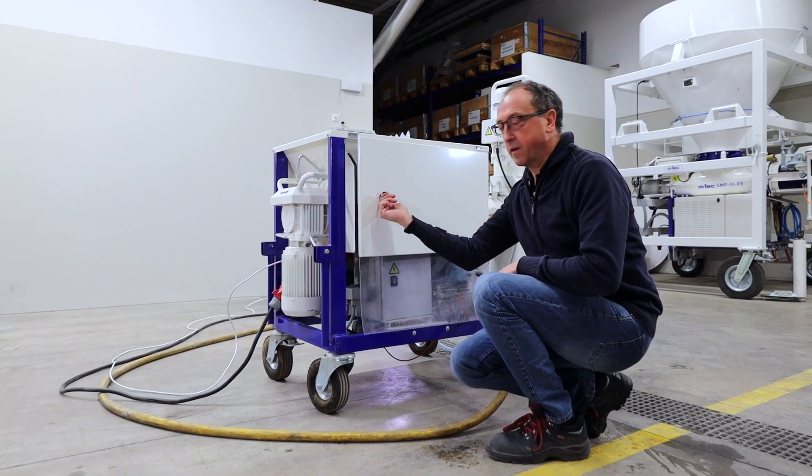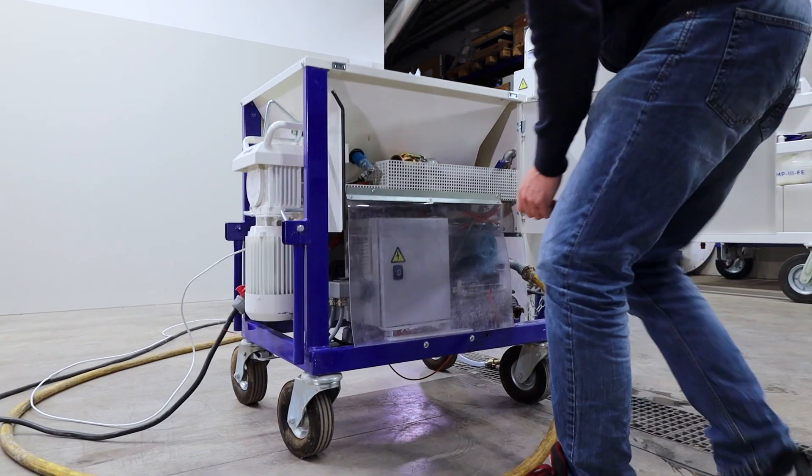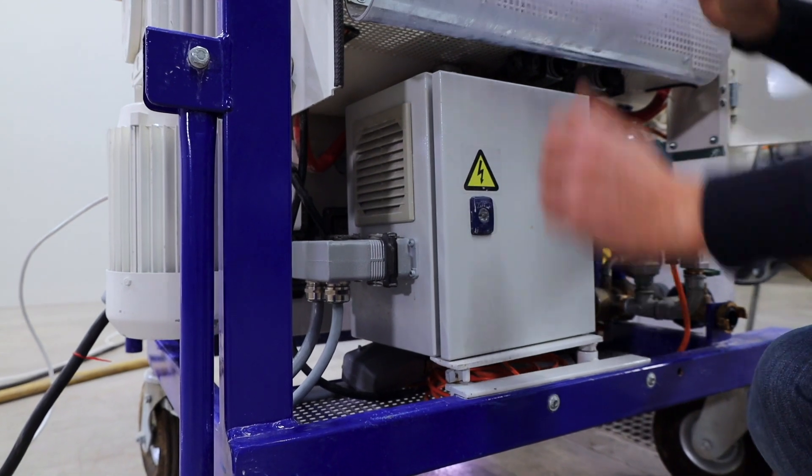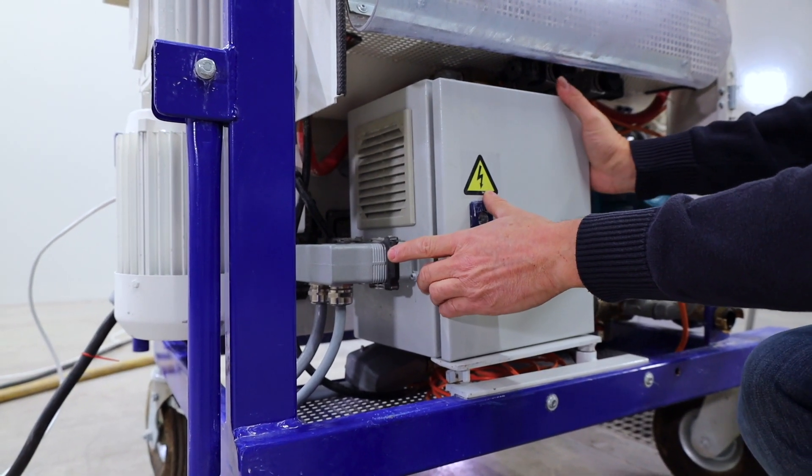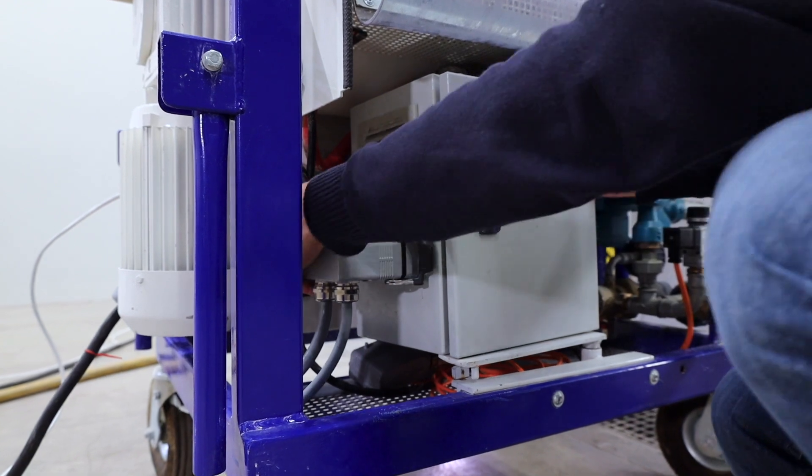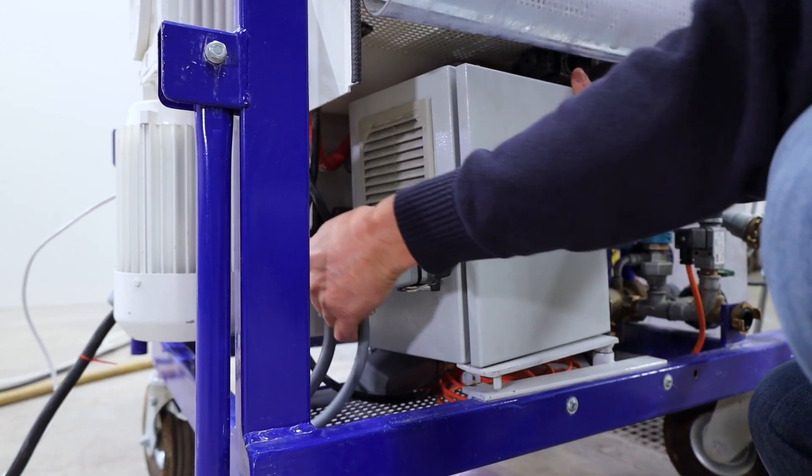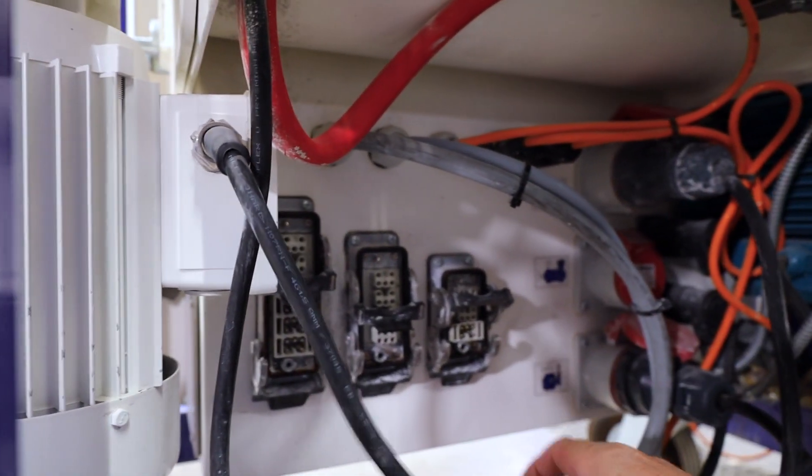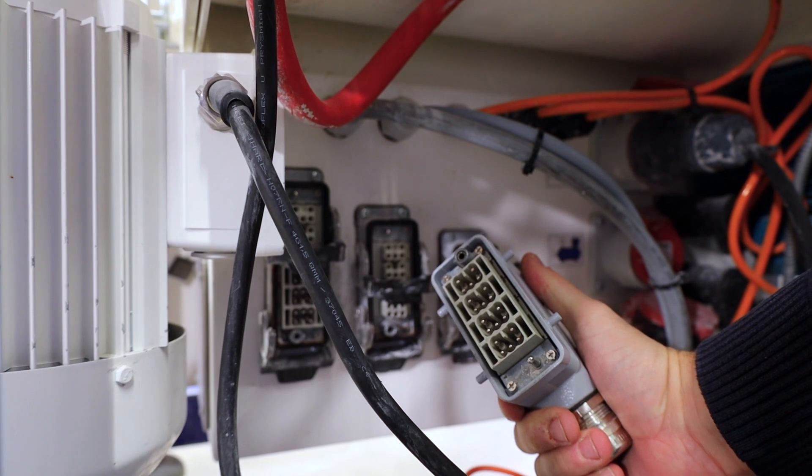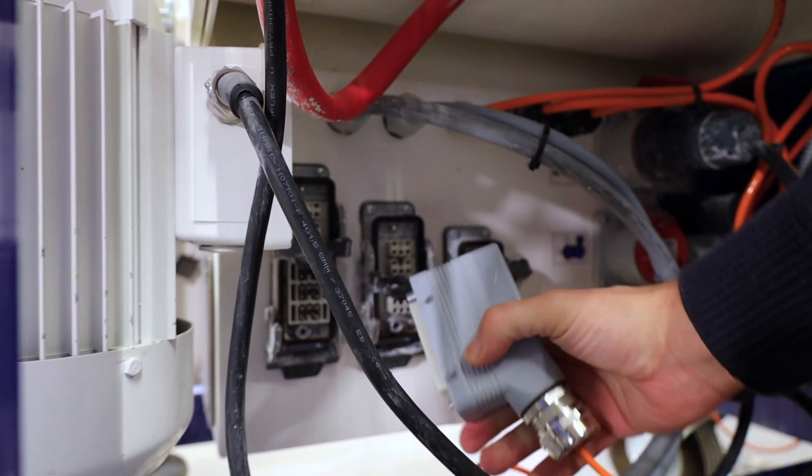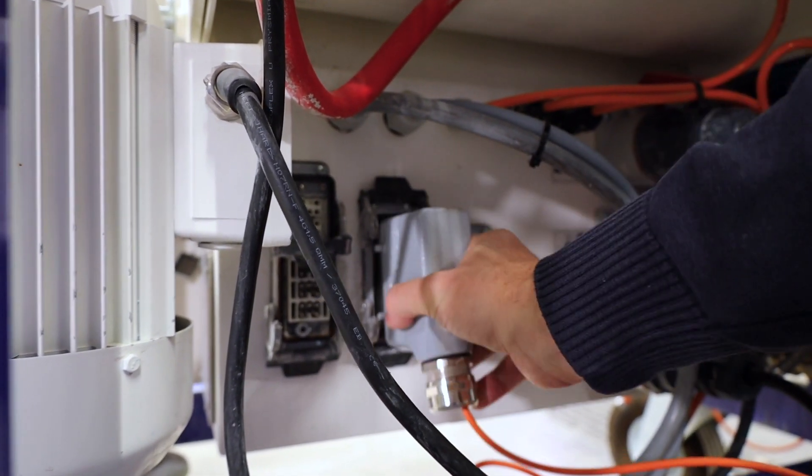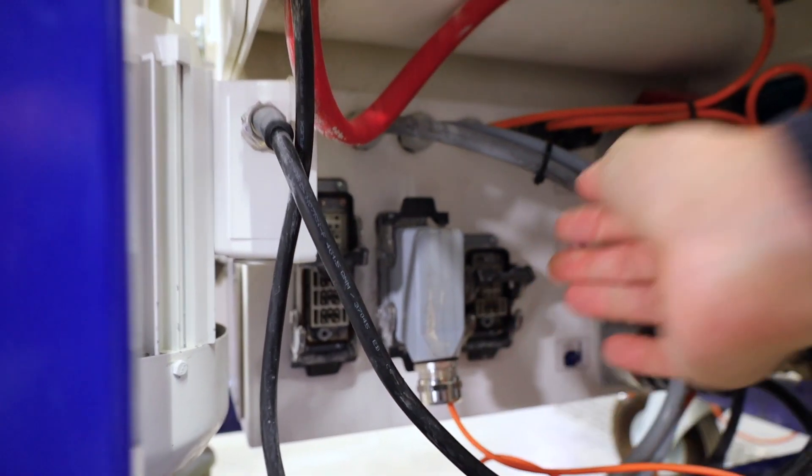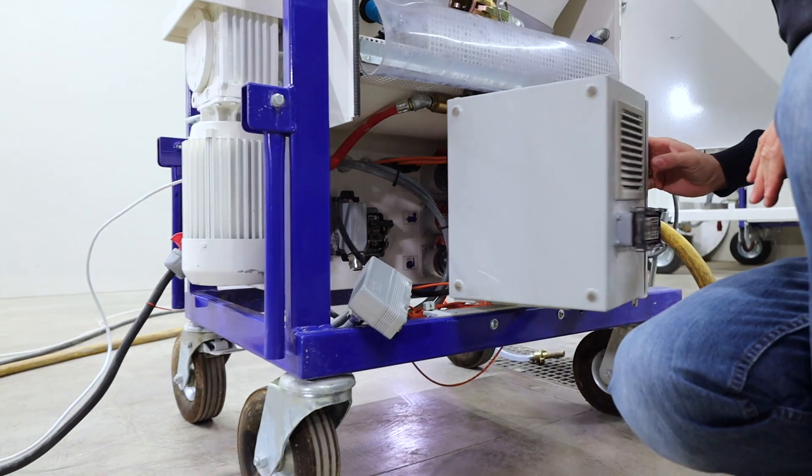First open the door. Second open the connector. Disconnect the frequency converter. Connect the plug which you have mounted before. Next close the connector and turn the frequency converter back.